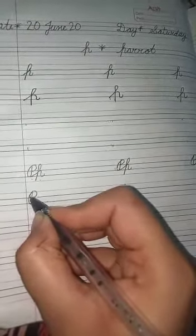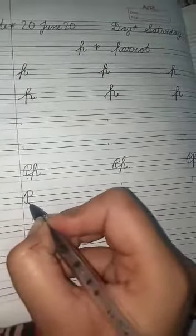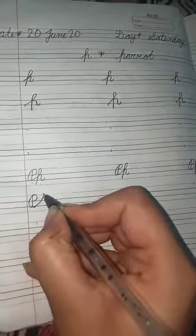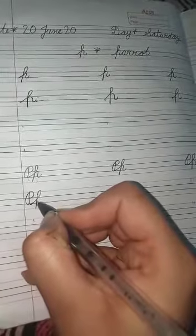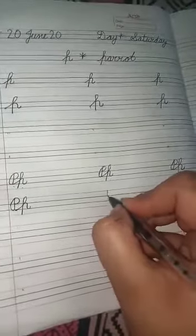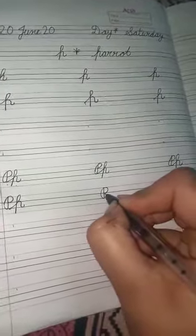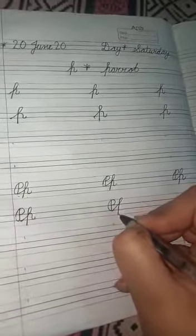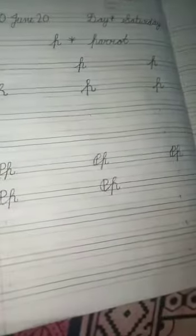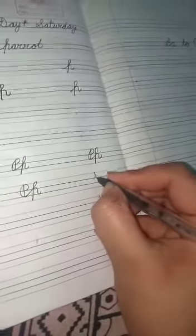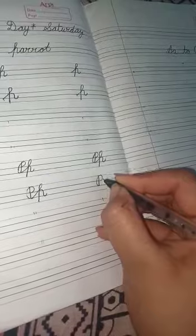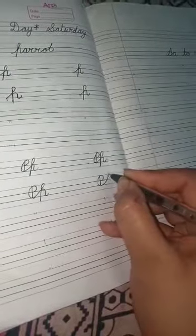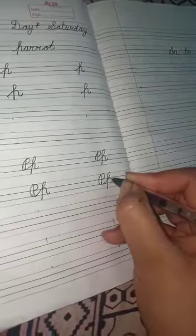Then start from here, small p for parrot, go upper side same as like this way. See again, firstly make capital P for parrot, then start from here, small p for parrot like this. See again, firstly make capital P, then make small p like this. They complete this.